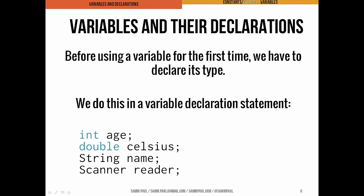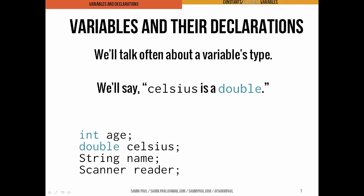Here you can see we have a couple of declarations of the types of certain variables. We have a variable called age that's going to be an int, a variable called Celsius that's going to be a double, a variable that's going to point to a String and we're going to call that name, and a Scanner variable that's going to point to a Scanner object, which we'll call reader. We're often going to be talking about a variable's type — for example, we would say Celsius is a double.